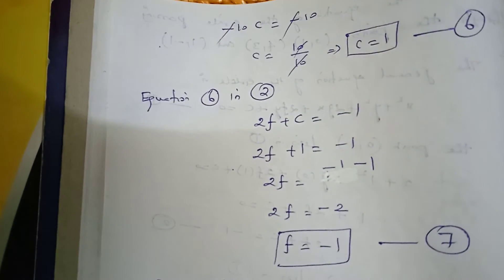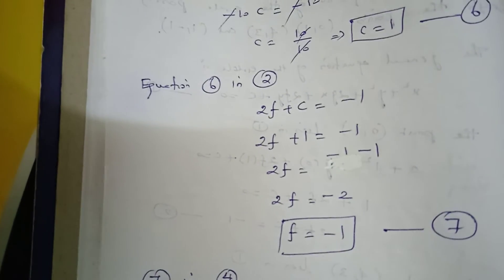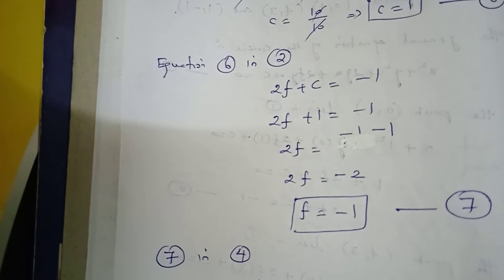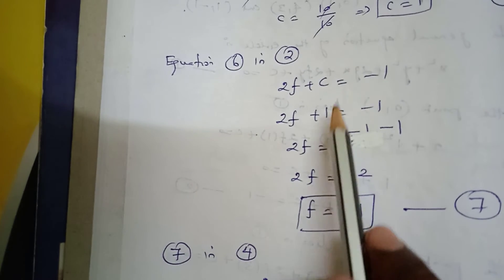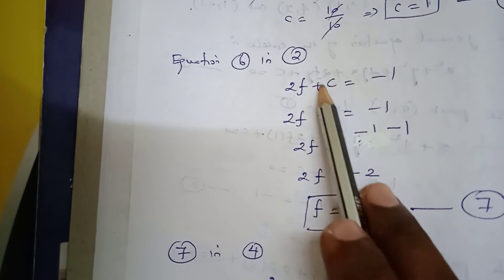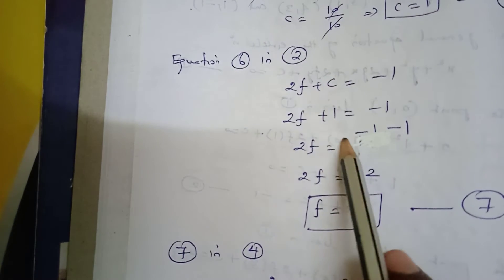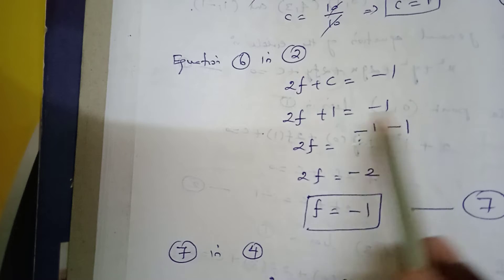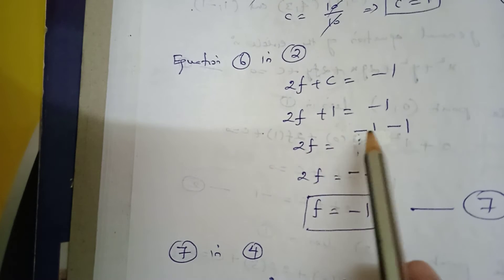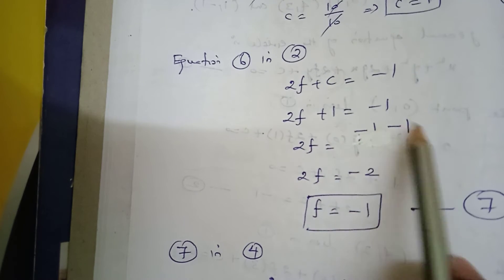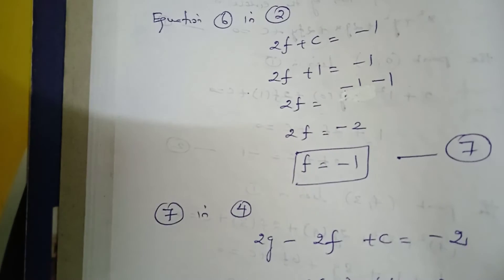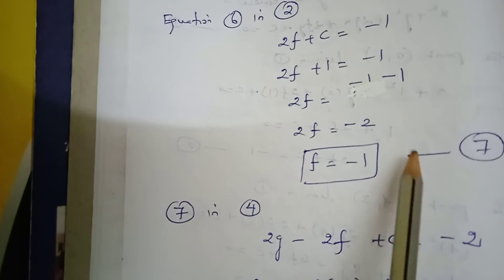Substituting equation 6 (c = 1) into equation 2: 2f + c = -1, so 2f + 1 = -1, giving 2f = -2, therefore f = -1. This is equation number 7.